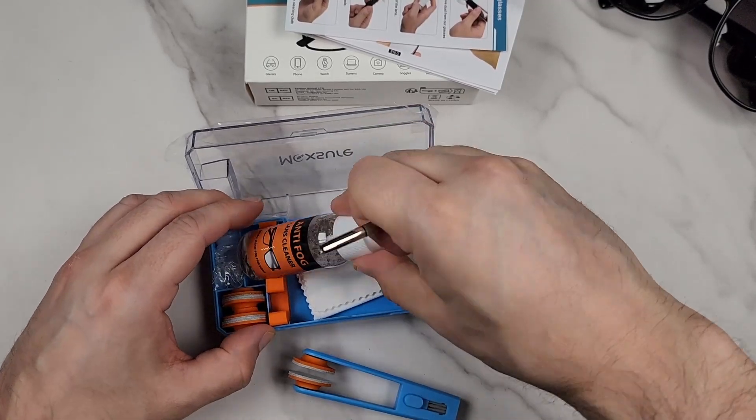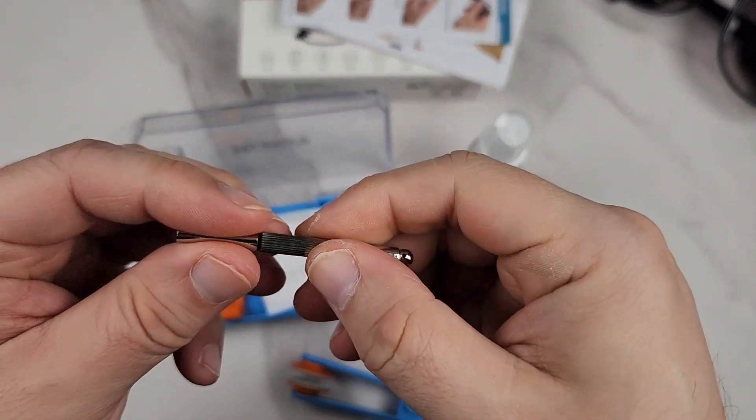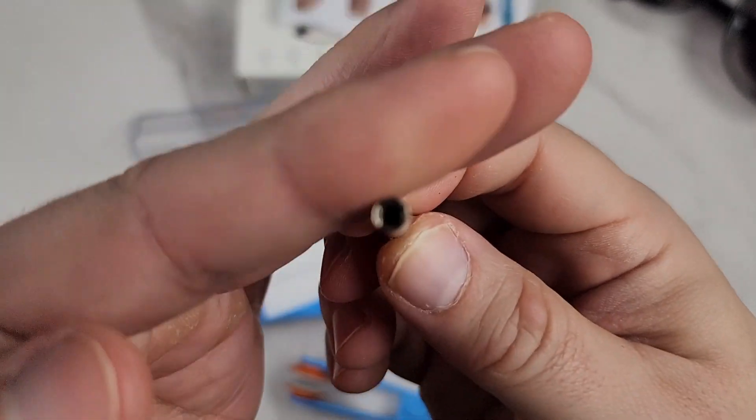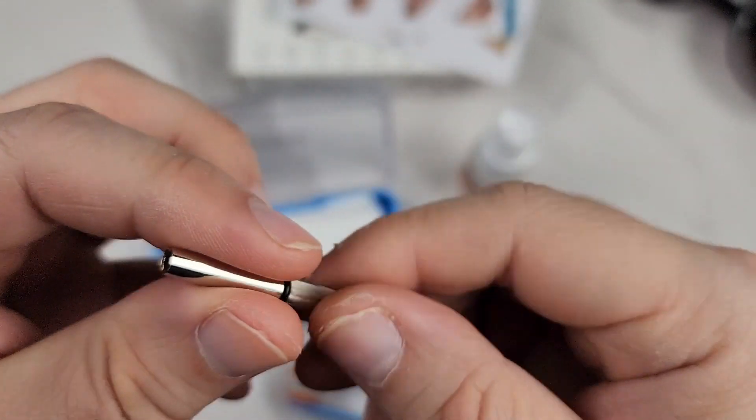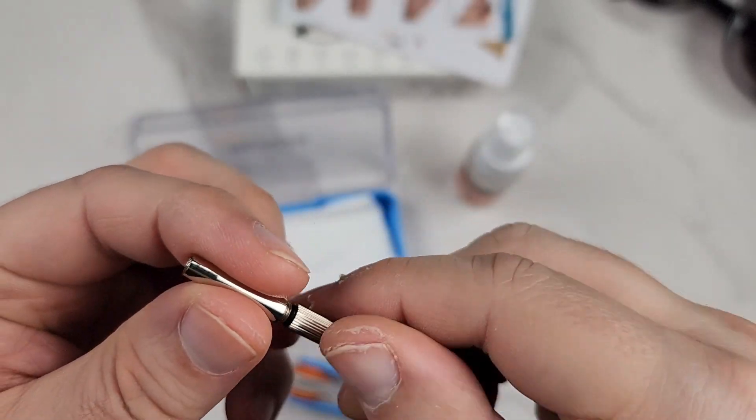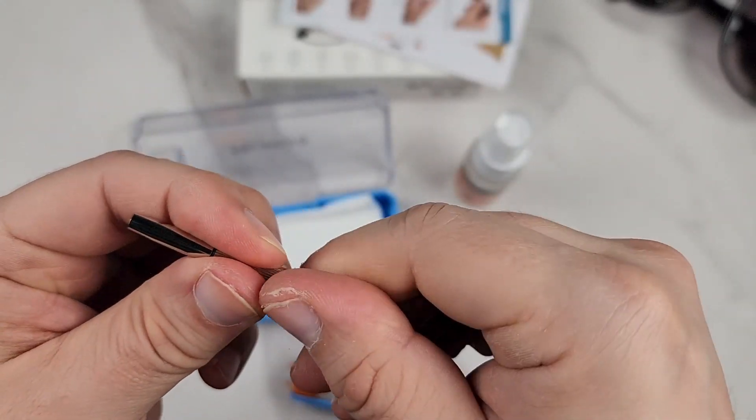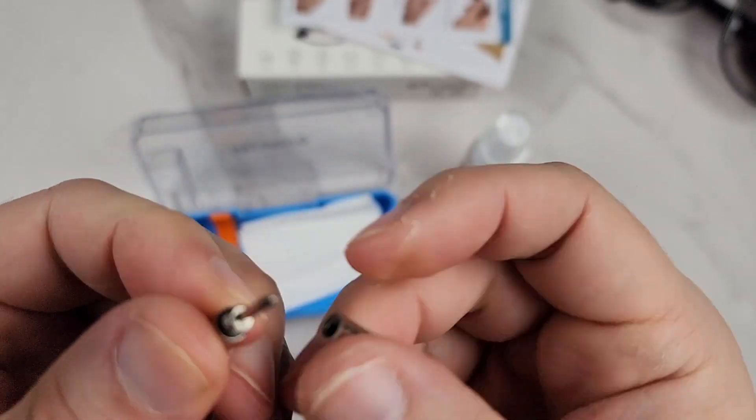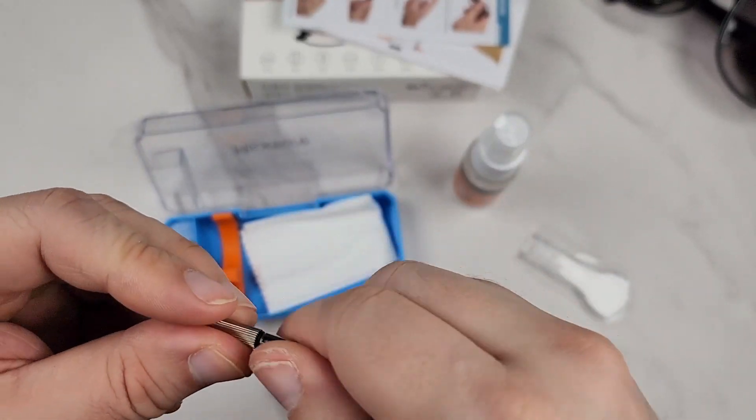They also include a 3-in-1 screwdriver set. This is like a hex, then you have a flat head on the inside to take away nose bridges if you want to fix your glasses. That's the regular small Phillips head.